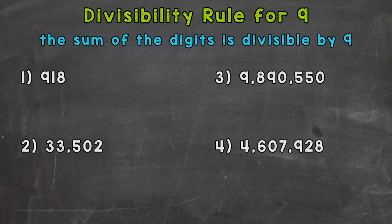So if the sum of the digits is divisible by 9, that means the original number is divisible by 9. Let's jump into our examples here and see what that rule means.